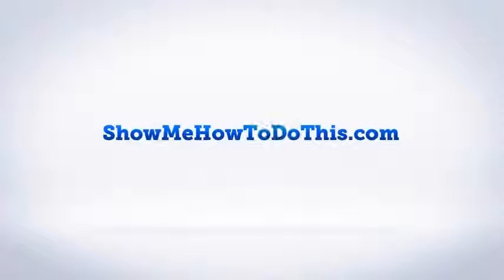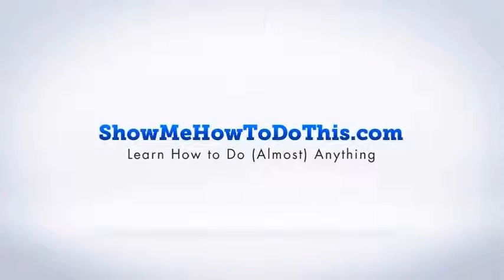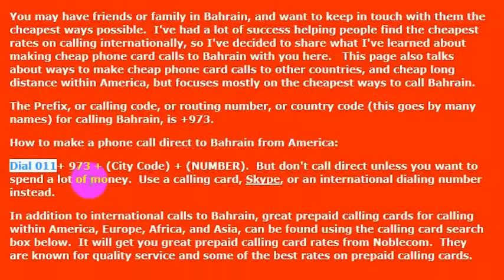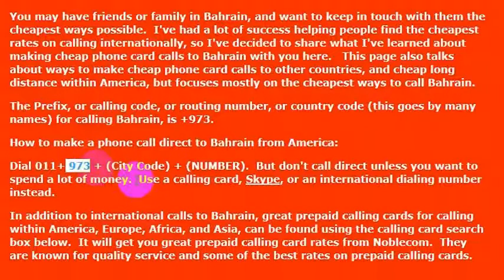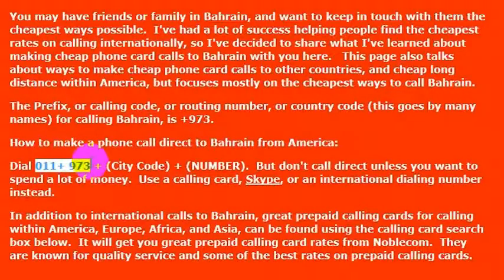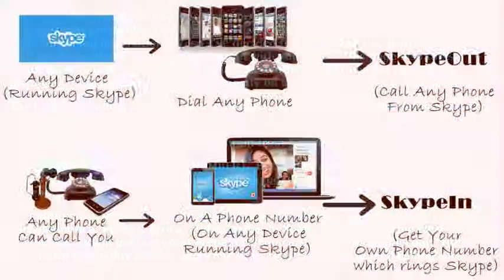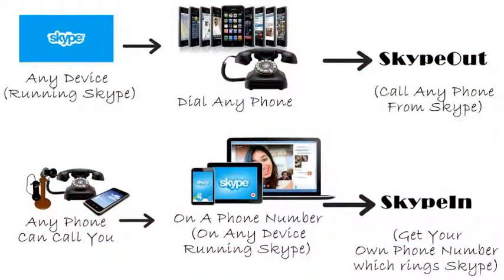You could call Bahrain directly simply by picking up your phone and dialing. Simply dial 011, which is the international dialing code from the U.S., and then you would dial 973, which is the country code for Bahrain. So you would pick up any phone that is internationally enabled, even a cell phone, and dial 011 plus 973, and then you would call your number. But I wouldn't really recommend calling direct.